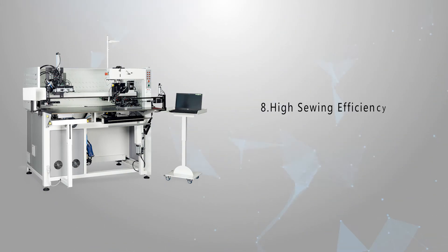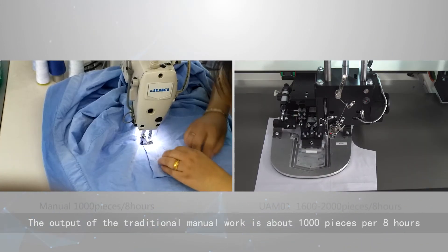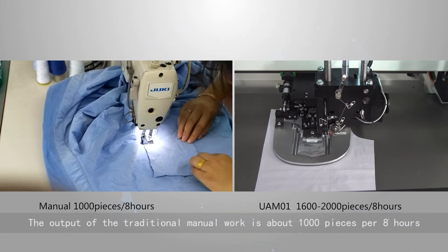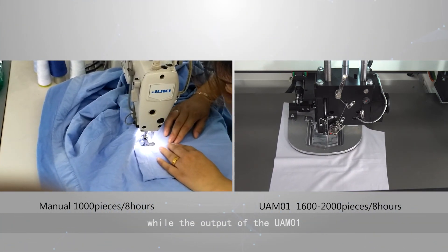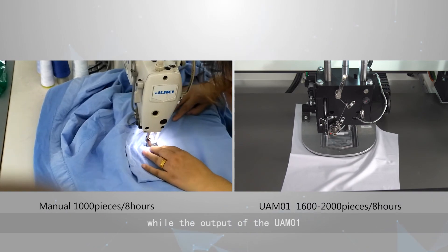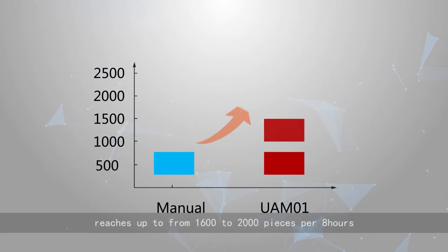High sewing efficiency. The output of the traditional manual work is about 1,000 pieces per 8 hours, while the output of the UAM01 reaches up to 1,600 to 2,000 pieces per 8 hours.